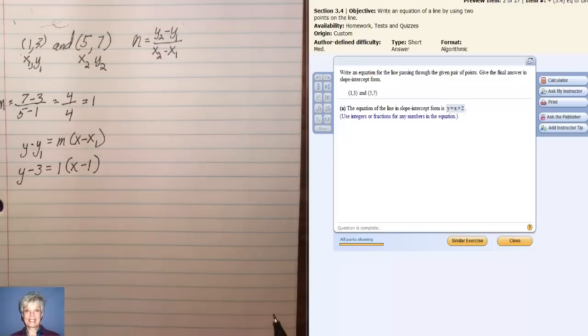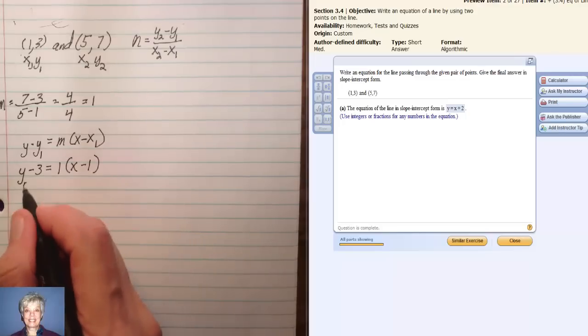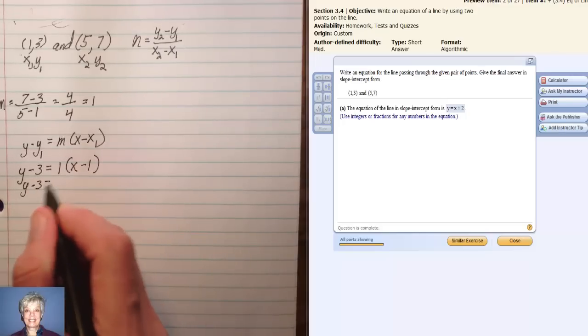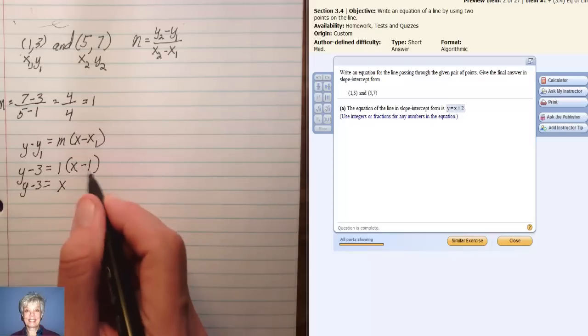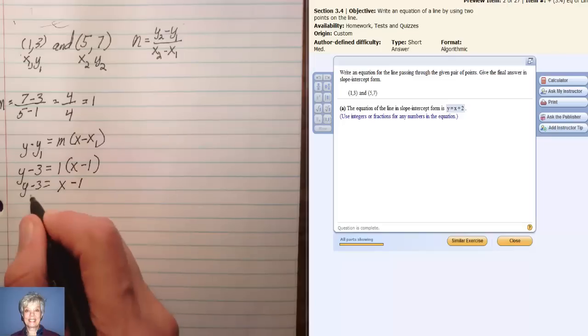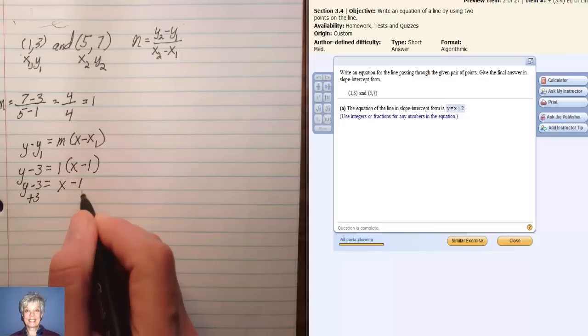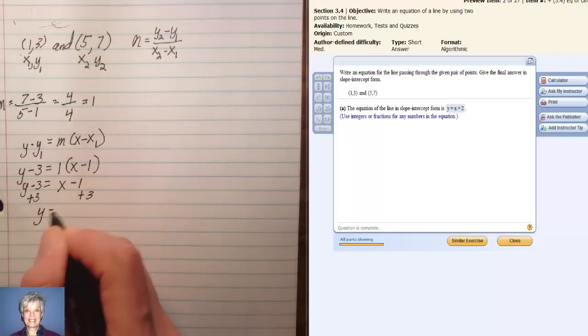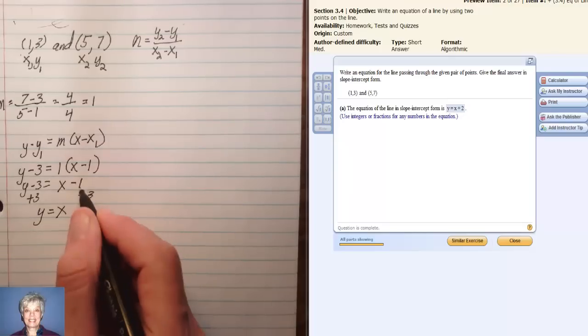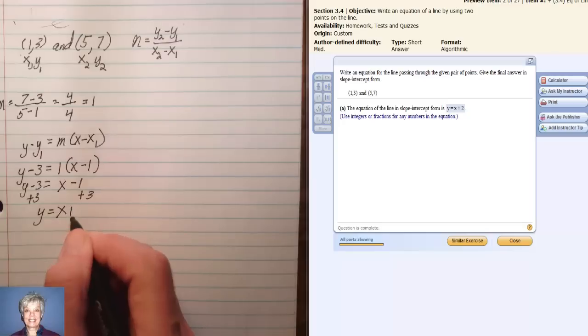Now I'm going to solve this equation for y. Y minus 3 equals 1 times x, which is x, and 1 times negative 1 is minus 1. Then I'll add 3 to both sides. So I'll have y equals x minus 1 plus 3, which is plus 2.